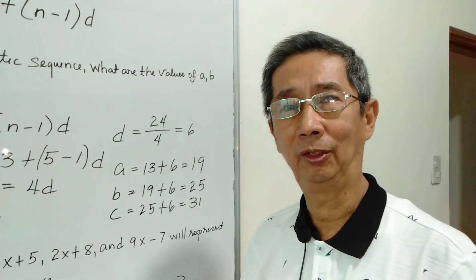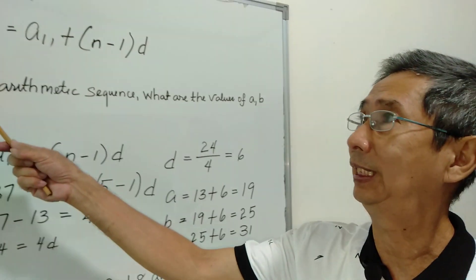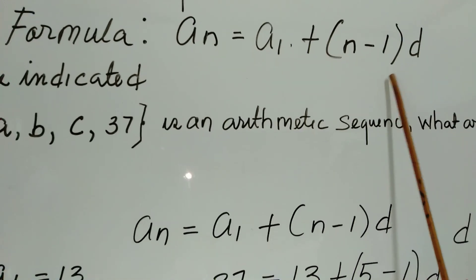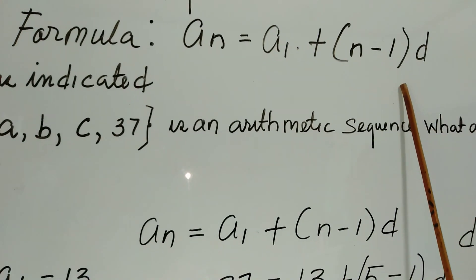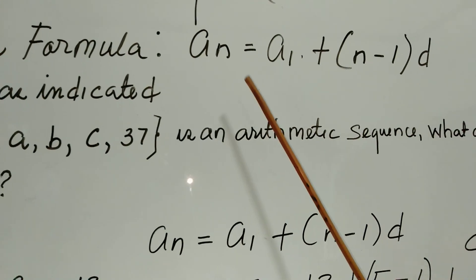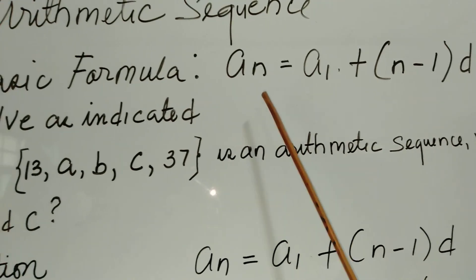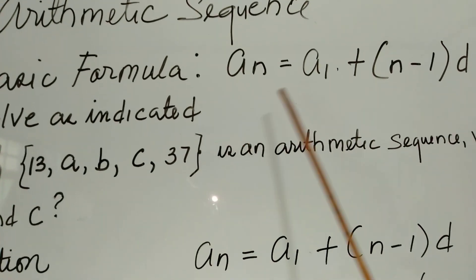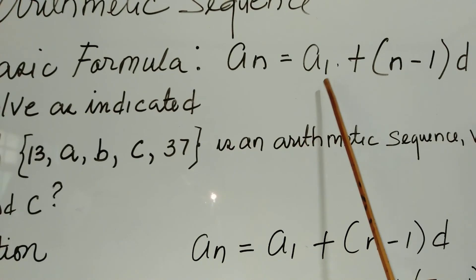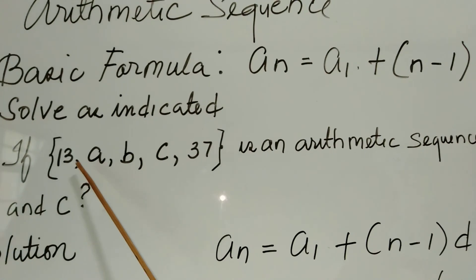Hi, good morning. Today's video is about arithmetic sequences and we're going to discuss the use of the basic formula: a sub n is equal to a sub 1 plus n minus 1 times d.